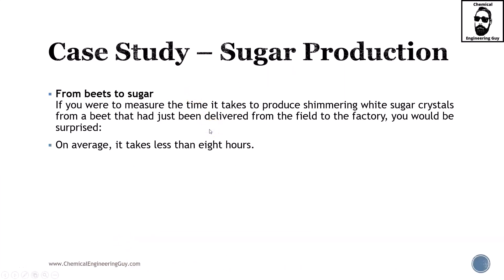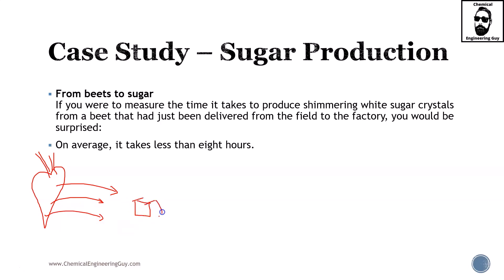Before we continue with the actual unit operations, I decided to present this case study, which is one of my favorites because it shows a very common process in daily life: sugar, and how we require separation processes involving solids. From beets to sugar — beets look pretty similar to a carrot but they are white — the main idea is to remove the sugar from inside and end up with a cube or crystal of white sugar. If you were to measure the time it takes to produce shimmering white sugar crystals from a beet that has just been harvested in the field, you will be surprised — it takes only eight hours.